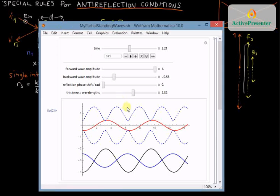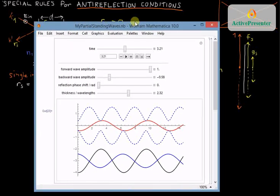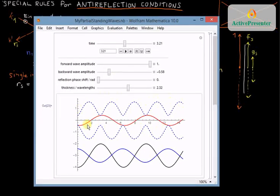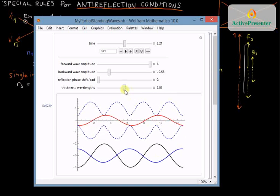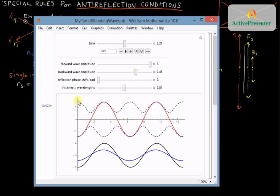So to satisfy the anti-reflection condition, it places a rule that only special thicknesses will allow that to happen. What are those special thicknesses? Well, one such special thickness is when we have an integer number of wavelengths in our thickness. You can see in that case if we have a node at x equals zero, we also get a node at the other end. If the backward wave amplitude is positive, then we will get an antinode at this interface at x equals zero, and then we also get an antinode at the other end.